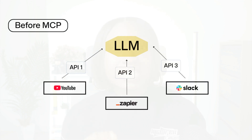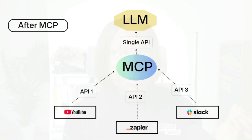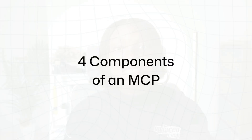MCPs solve this limitation. They give a standard way of connecting AI models to real tools, applications, and data. For example, with an MCP, LLMs can get information from your calendar, your files, or a database, and use tools like GitHub or Google Drive. You don't have to rebuild the same logic over and over — you just follow the MCP format. There are four main core components of an MCP that you should know.